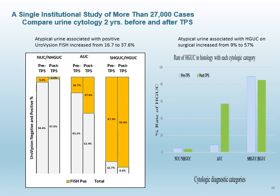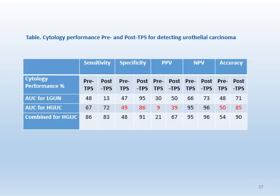We also examined UroVysion FISH results and follow-up surgical results in different urinary cytology diagnostic categories. AUC associated with positive FISH increased from 16.7 to 37.6 percent. AUC associated with follow-up high-grade UC increased from 9 to 57 percent. This table showed cytology performance in detecting urothelial carcinoma. The performance of AUC for detecting high-grade UC was significantly improved: specificity increased from 49 to 86 percent, positive predictive value improved from 9 to 39 percent, and accuracy improved from 50 to 85 percent.